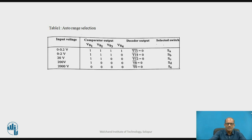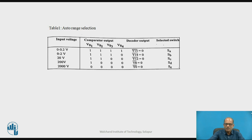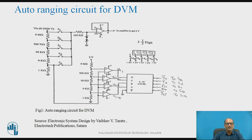In this way, the circuit works in auto-ranging mode. The important components of the circuit are the range selector switches, which are solid-state switches, four comparators, and the 4-to-16 decoder.